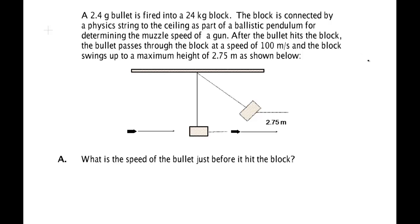In this video we will apply the conservation of momentum principle to a collision to solve a problem. A 2.4 gram bullet is fired into a 24 kilogram block. The block is connected by a physics string to the ceiling as part of a ballistic pendulum for determining the muzzle speed of a gun.